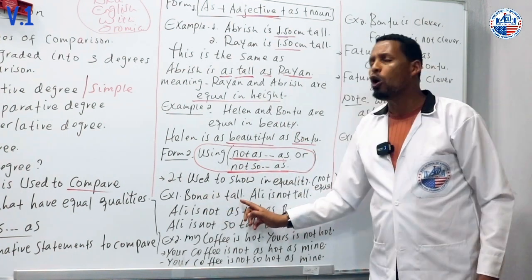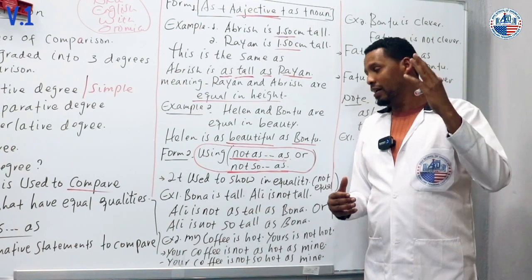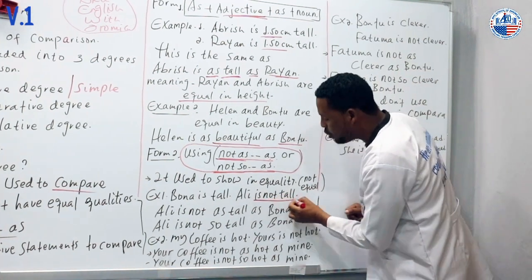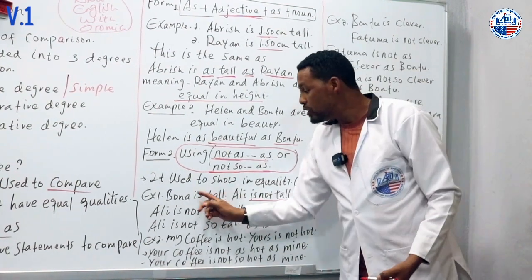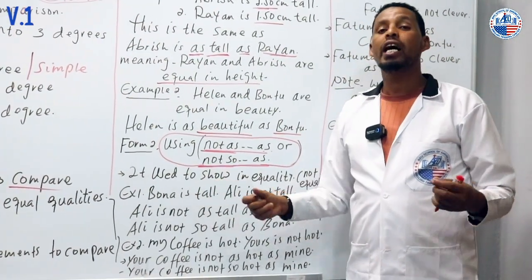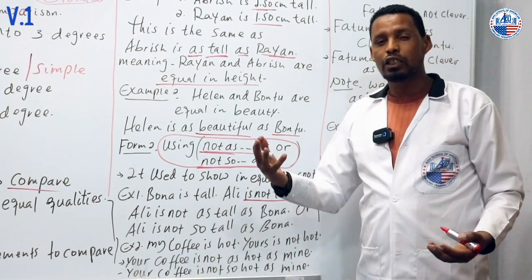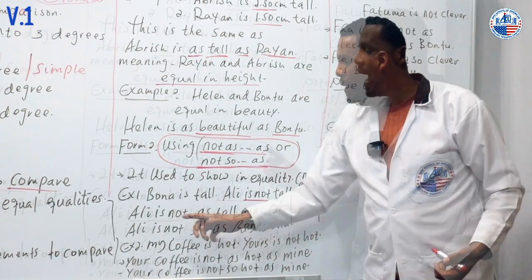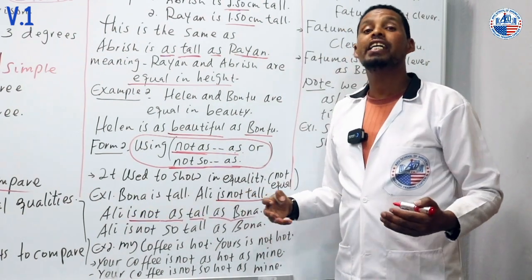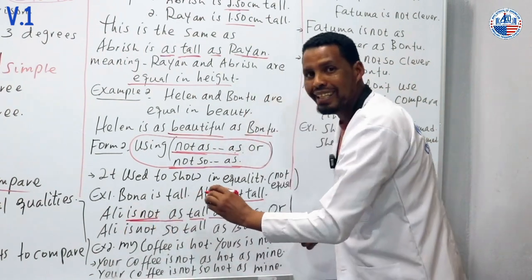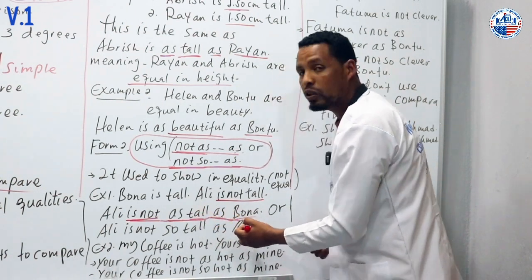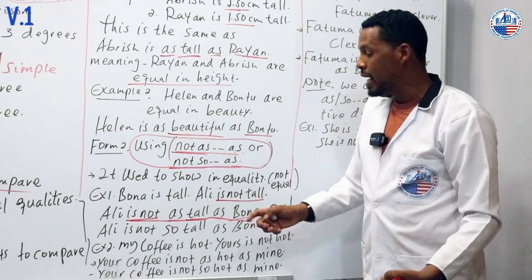Example: Ali is not as tall as Bona. This means Ali is shorter than Bona - they don't have equal height. 'Tall' is an adjective that describes the noun. So when comparing unequal qualities, we use this negative form.